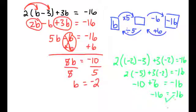Once again, our check seems to work out. So we feel pretty confident in knowing that b is in fact equal to negative 2. And that is how we use inverse operations and the property of equality to solve two-step equations.